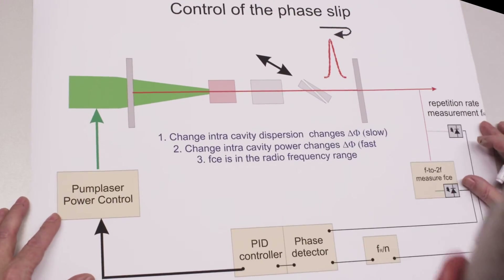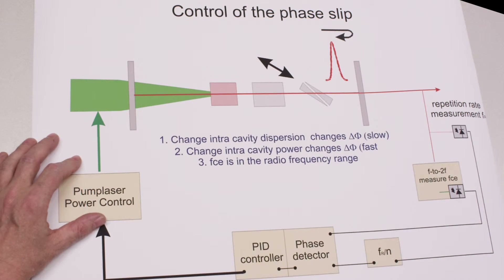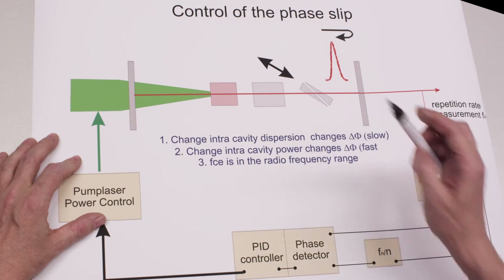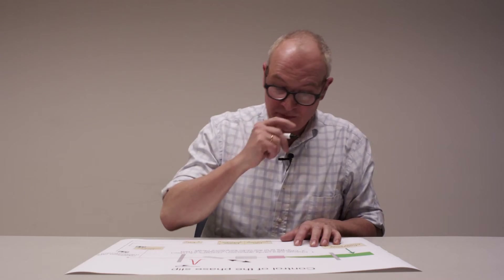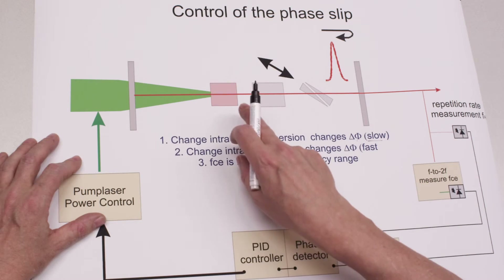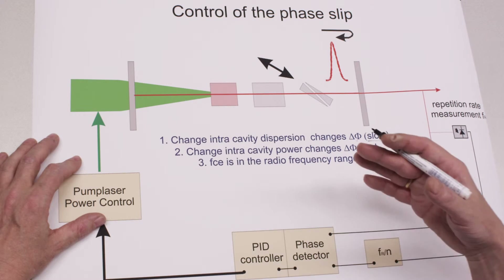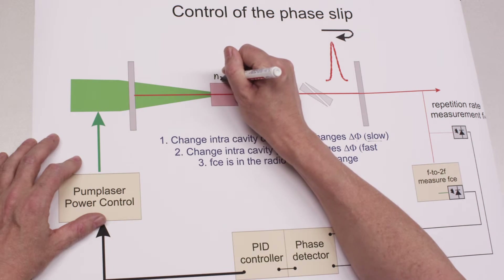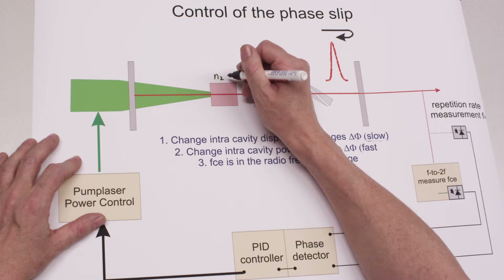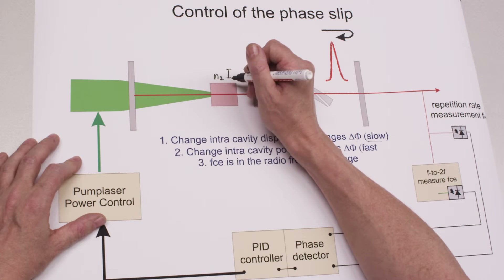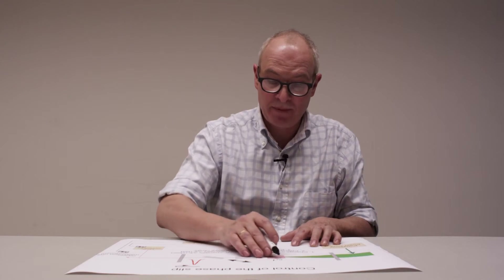The change of intracavity dispersion changes the phase slip. We can insert wedges to change the internal dispersion of the cavity by moving them in and out, but this is a slow mechanism. A fast mechanism is provided by the nonlinearities in the cavity. The intracavity power is quite high, so nonlinear phenomena arise — for example, the refractive index of the gain medium has a nonlinear component: n₂ times the intensity. By changing the intracavity power — for example by changing the pump power — the refractive index changes, and this can be done very fast. So we have a slow knob and a fast knob.